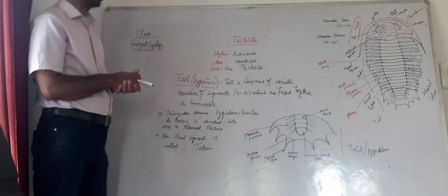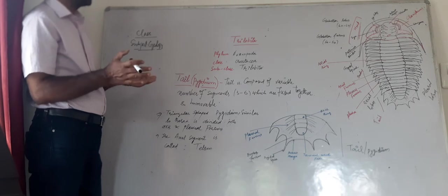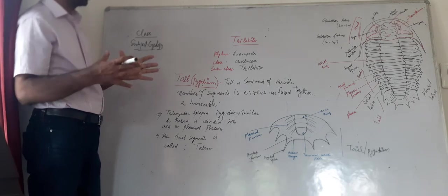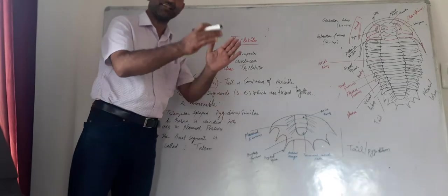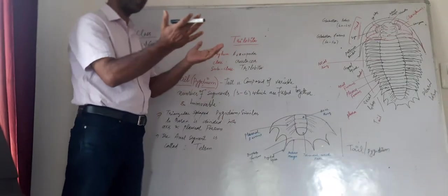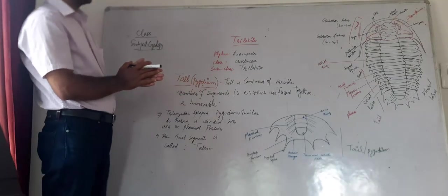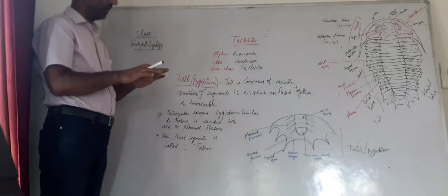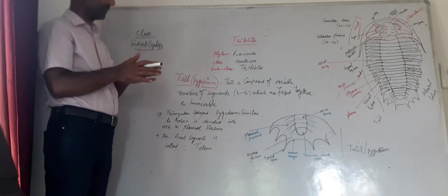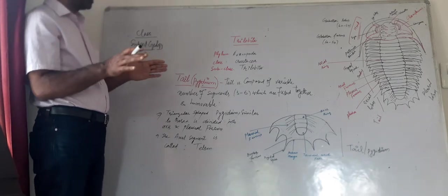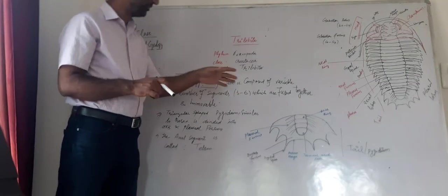Three to six segments hote hain jabke body mein zyada segments hote hain. Tail mein count 3 se le ke 6 segments aur wo fuse together is tarah se hai ke wo move nahi karte hain, just like they represent one structure. Yeh ek hi structure represent karta hai kyunke iski jo lobes axial rings hain yeh ek dusre ke sath is tarah jurhe huye hain, fuse kiye huye hain.